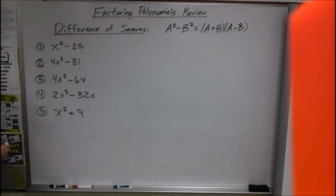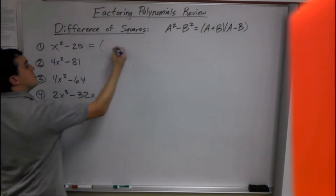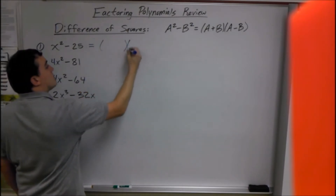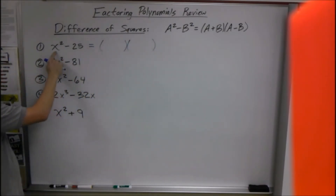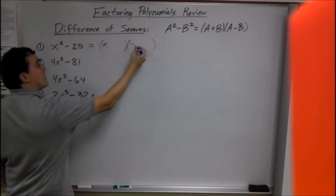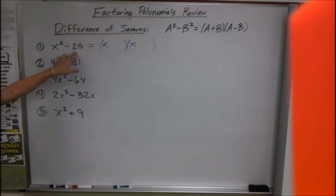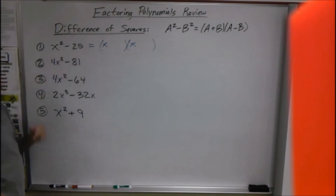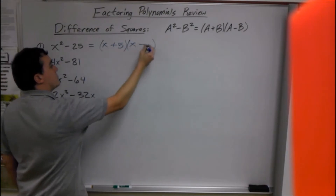So the first example we have is x² minus 25. To fill in the parentheses, the first term is the square root — the square root of x² is x. And then the square root of 25 is 5, so we get (x + 5)(x - 5).